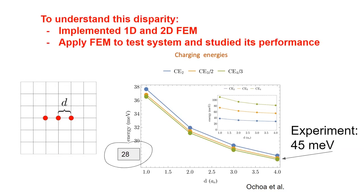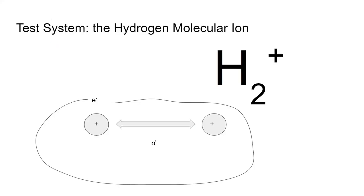My project this summer is essentially to try to understand the finite element method and what's causing it to underestimate these charging energies. I did this by applying the finite element method to a test system. That test system is the hydrogen molecular ion, which, as pictured here, is a system of two protons and one electron.